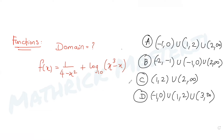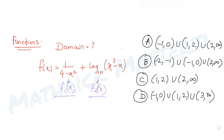Let's figure out which answer is correct. First, I can see there are two functions. Let's call them f1(x) and f2(x). We'll find the domain of each individually and then take the intersection — the values of x common to both.